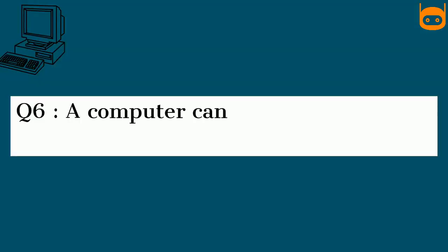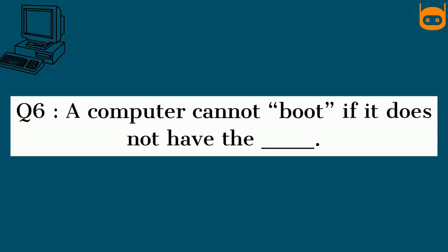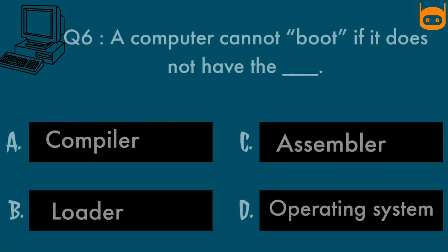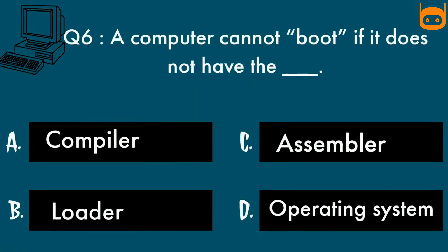Our next question is: A computer cannot boot if it does not have the DASH. Options are: Option A, Compiler. Option B, Loader. Option C, Assembler. Option D, Operating system.